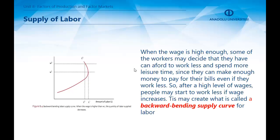When we look at the given figure about the supply of labour, there is an obvious positive relationship between wages and willingness to work. We can easily conclude that an individual worker's labour supply curve is upward sloping. Since the labour market supply curve is the sum of all individual labour supply curves, it is also upward sloping.